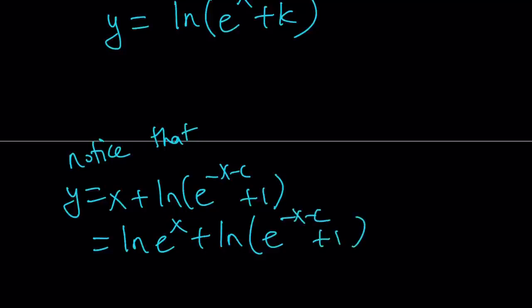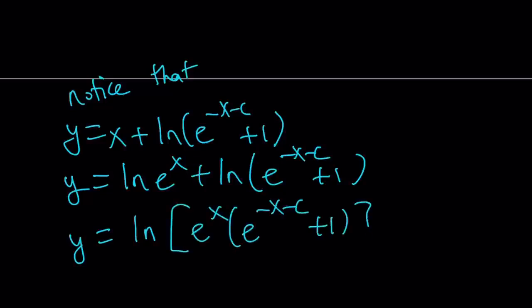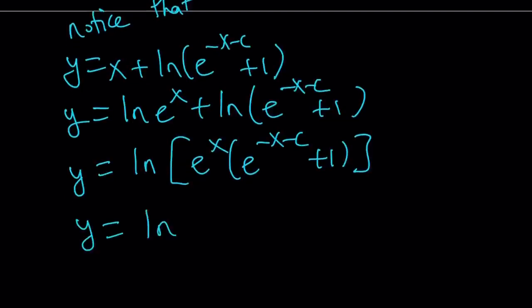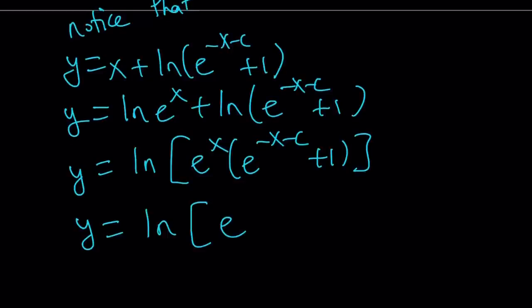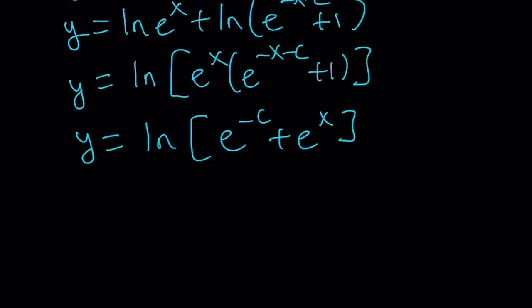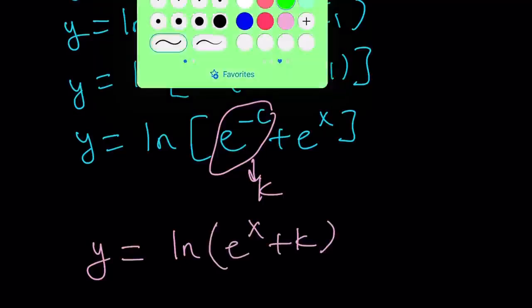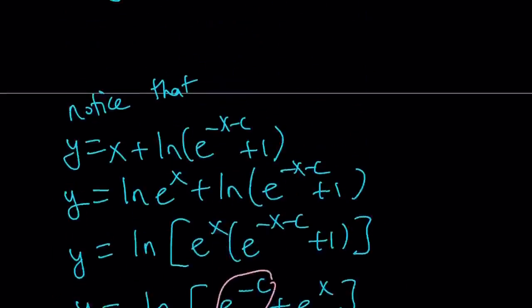We're adding two logarithms, so we can combine them into the ln of a product: ln of e to the power x times (e to the power negative x minus c plus 1). Distributing e to the power x: when you multiply e to the power x by e to the power negative x minus c, the x's cancel — x minus x is 0 — so we get e to the power negative c plus e to the power x. Since c is a constant, e to the power negative c is also a constant, so we call it k. Our solution becomes y equals ln of (e to the power x plus k), which is the same answer as Method 2.